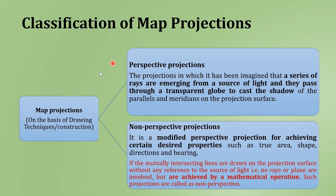Now coming to the classification of map projection. On the basis of the drawing technique or construction, these map projections may be classified into perspective projections and non-perspective projections. Perspective projections are those in which a series of rays are imagined to emerge from a source of light, passing through a transparent globe to cast the shadow of the parallels and meridians on the projection surface. Non-perspective projections are modified perspective projections for achieving certain desired properties such as true area, shape, direction, and bearing. Here we are not considering the source of light, but instead have intersecting lines drawn on the projection surface by mathematical operation.